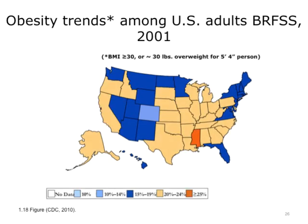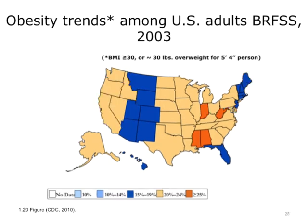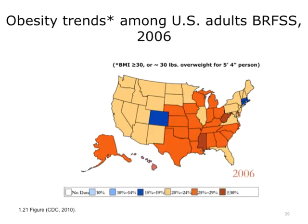Beginning in the 2001 graph, we see trends continue to increase as reflected by the red. In 2002, the number of states noted in red continue to increase, indicating obesity greater than 25%. In 2003, states noted in red continue to increase, and the number of states with obesity at greater than 20% also increases. This last slide is for 2006, and the numbers of obese Americans continue to climb beyond 2006.